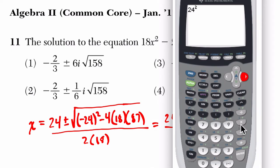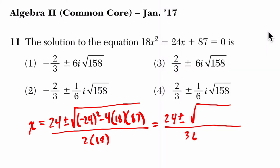minus 4 times 18 times 87, negative 5688.